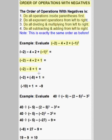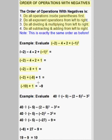Then we add and subtract from left to right. I'm going to rewrite that subtraction as the addition of a negative. We add negative 2 plus negative 8, and that makes negative 10. Then that gives us negative 10 plus 1, and negative 10 added to 1 is negative 9, which is our answer.